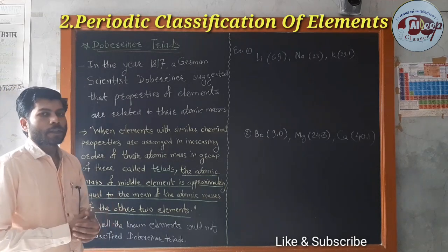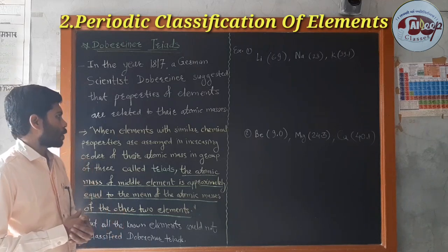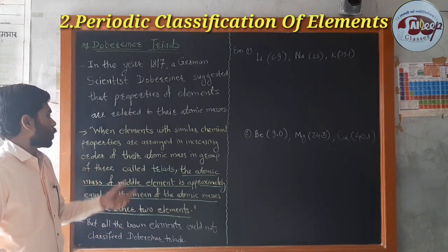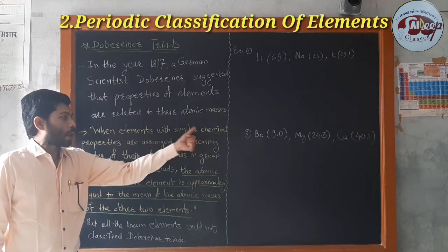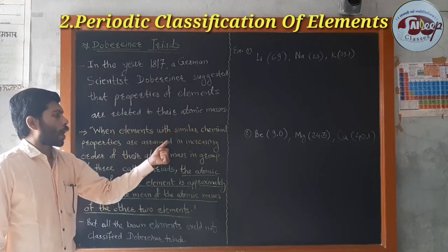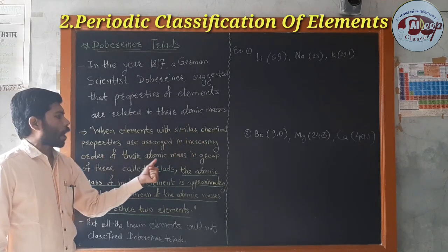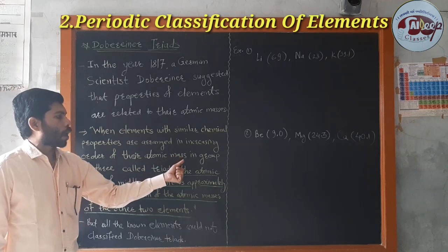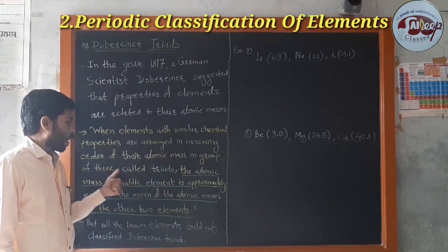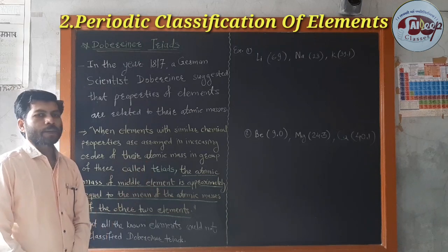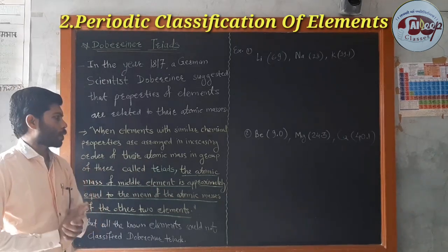What is Dobereiner's Triads? When elements with similar chemical properties are arranged in increasing order of their atomic mass, groups of three are called Triads. This is a simple definition of Triads.